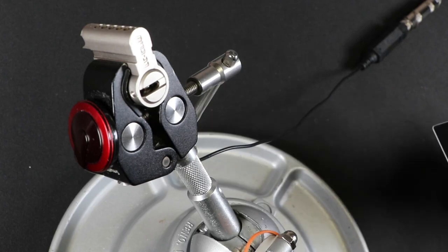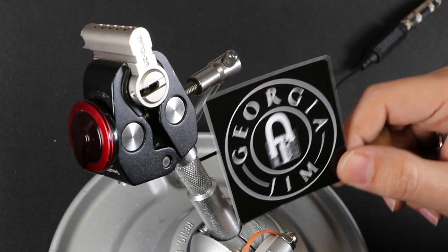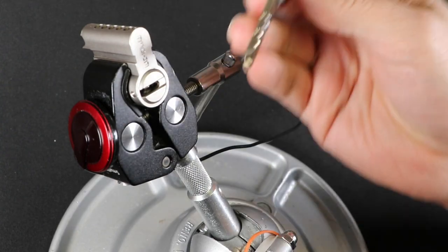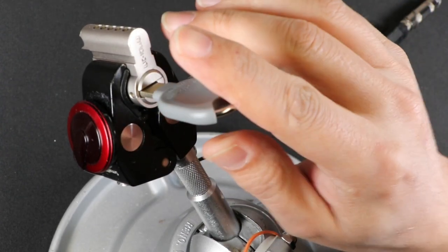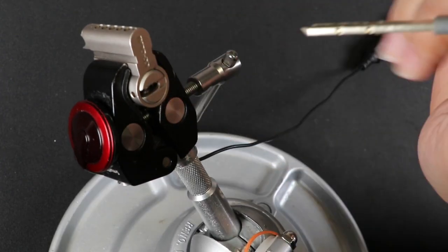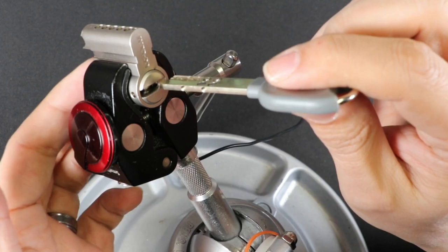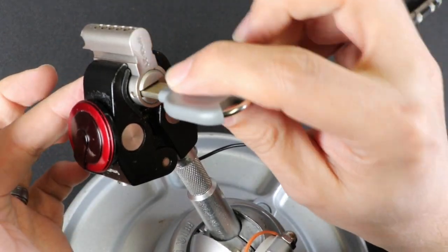All right, here I have a Rav Bariach Loxus that Georgia Jim lent me. I think the key is a little bit tough because it's part of a double euro that's been cut in half. I think there's usually something here that stops the key from going too far.